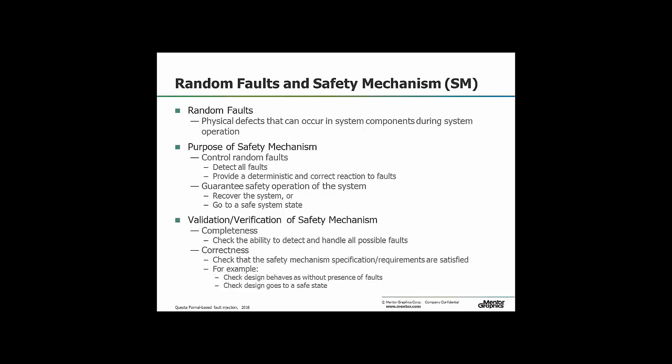There are two aspects to the safety mechanism we need to be aware of in terms of verification. One is completeness — it needs to be able to detect and trap every possible fault. And then it also needs to behave correctly: trap the fault and go to that safe state, or trap that fault and stop it interfering with the functionality of the design.